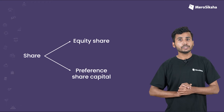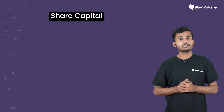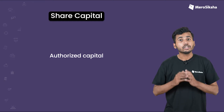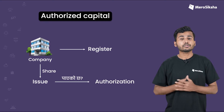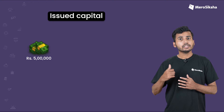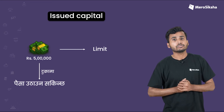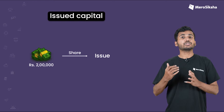These are the sub-categories and terminologies around share capital. First is Authorized Capital — this is the maximum capital a company is authorized to raise, let's assume as the upper limit. The next type is Issued Capital — if the authorized limit is 5 lakhs and you want to raise 2 lakhs, that 2 lakhs is your Issued Capital.